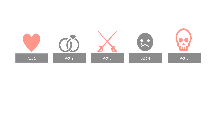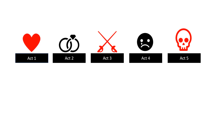Now we're going to look at Romeo and Juliet, specifically one particular motif — the motif of plants — and explore it in some detail. I'll include lots of quotations to give you examples and ideas, but you really only need to use one word from each quotation.